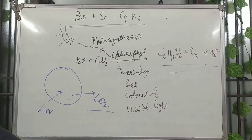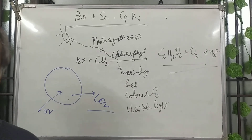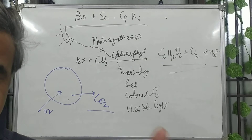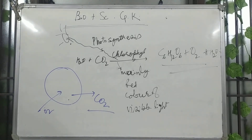Next question: where are RBCs produced in the body? RBC — red blood cells or red blood corpuscles. The options are bone marrow, liver, heart, and kidney. RBC is produced in bone marrow. Next: growth hormones are produced by the pituitary glands. If there is abnormality in pituitary glands, growth will be abnormal.